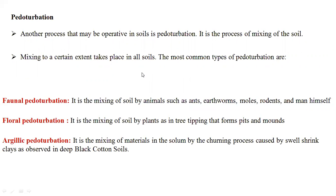Pedoturbation is a mixing process operating in soils. There are three types: faunal pedoturbation — mixing by animals such as ants, earthworms, moles, rodents, and humans; floral pedoturbation — mixing by plants such as tree tipping from pits and mounds; and argillic pedoturbation — the churning process caused by shrink-swell clays, as observed in deep black cotton soils with 2:1 expanding clay minerals.